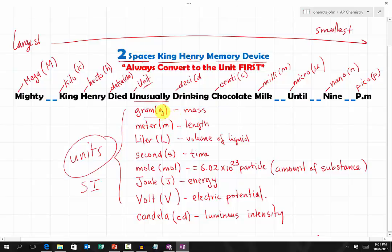Grams (g) is for mass; meters (m) for length; liters (L) for volume of liquid; seconds (s) for time; mole (mol) for amount of substance — a mole equals 6.02 times 10 to the 23rd particles. Joules (J, capitalized) is a unit for energy; volt (V, capitalized) is a unit for electric potential; and candela represents luminous intensity. These are all the SI units you work with in chemistry.